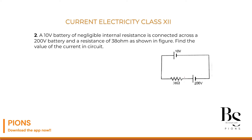Find the value of the current in the circuit. We know from Ohm's law, voltage V equals I times R, so current I must equal the total voltage in the circuit divided by the total resistance in the circuit.